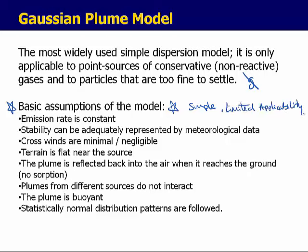Some of the assumptions are that the emission rate is constant — it's not a dynamic model. The stability can be adequately represented by meteorological data. Crosswinds are minimal. Terrain is flat near the surface. The plume is reflected back into the atmosphere when it hits the ground, so there's no major absorption or sink to the land surface.